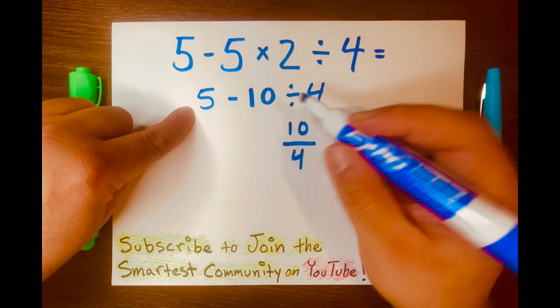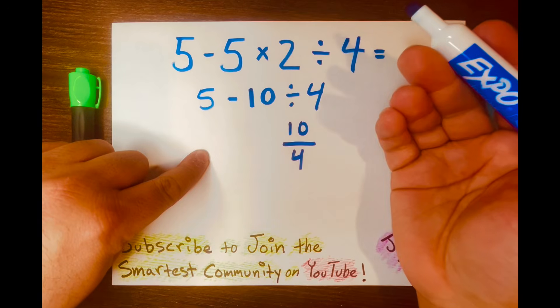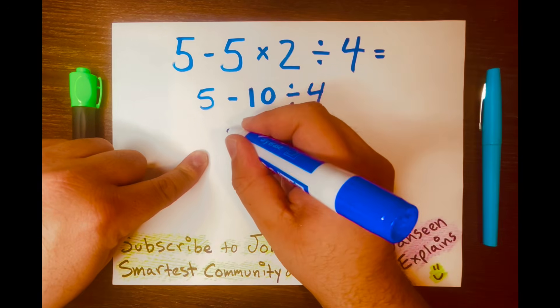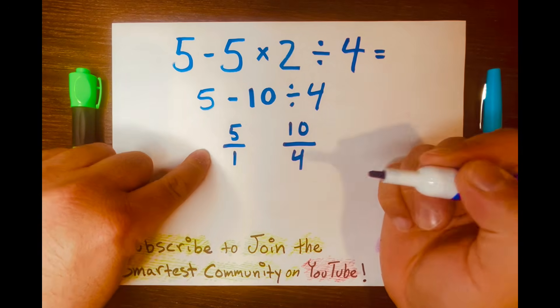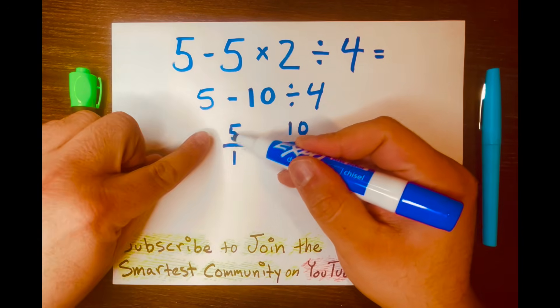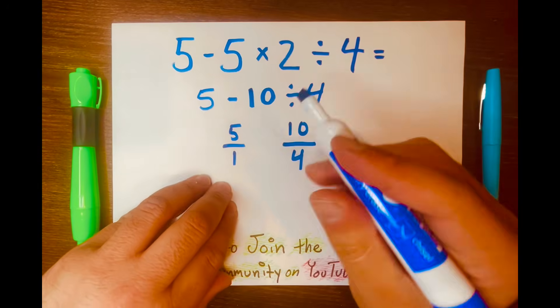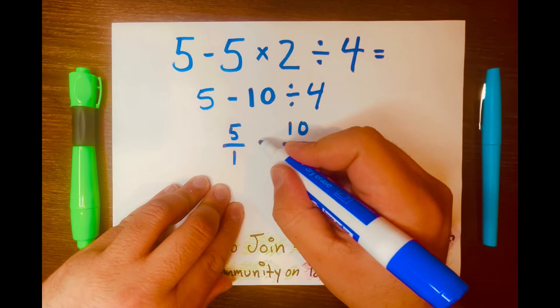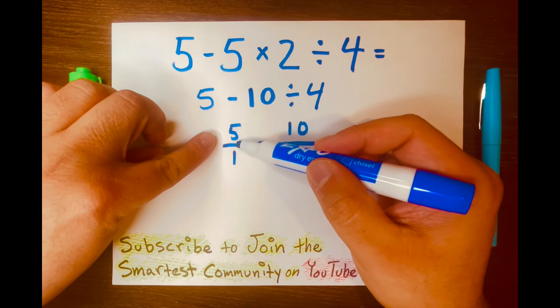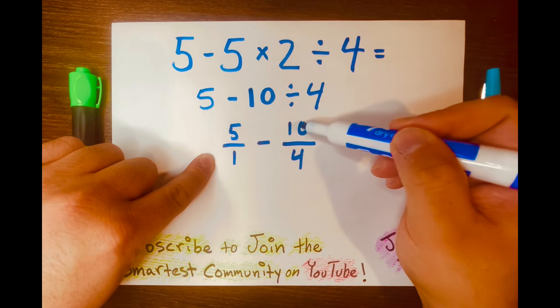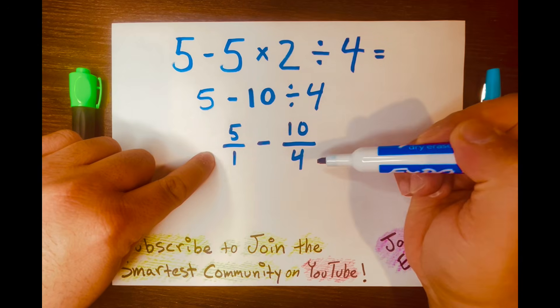And then let's bring down the 5 in a fraction form to make the math easy. So let's write it like this, 5 over 1. And we all know that 5 over 1 equals 5. And then bring down the subtraction symbol down. And now we're looking at 5 over 1 minus 10 over 4.